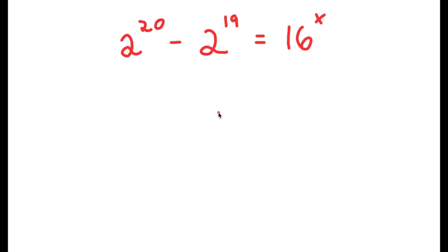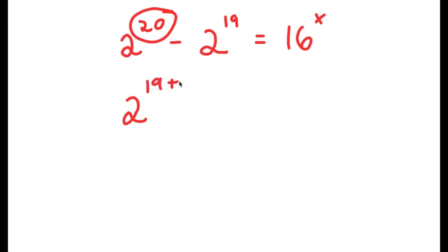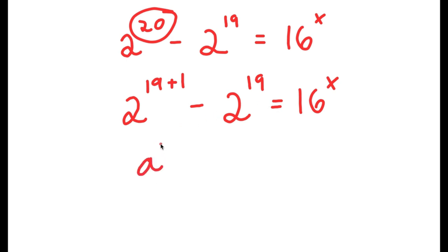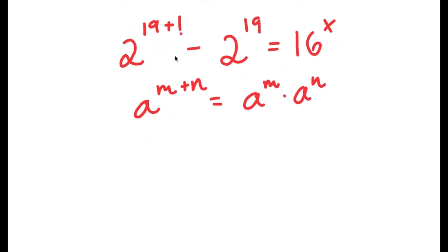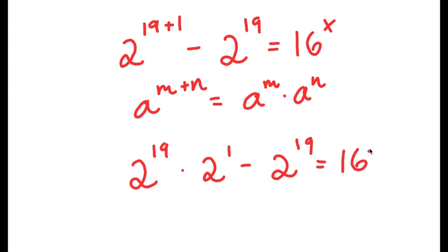In this problem, I have 2 to the power of 20 minus 2 to the power of 19 is equal to 16 to the power of x. I'm going to first start by rewriting 20 as 19 plus 1. So now I have 2 to the power of 19 plus 1 minus 2 to the power of 19 is equal to 16 to the power of x. If I have something in the form a to the power of m plus n, this is equal to a to the power of m times a to the power of n. So 2 to the power of 19 plus 1 equals 2 to the power of 19 times 2 to the power of 1, minus 2 to the power of 19, equals 16 to the power of x.